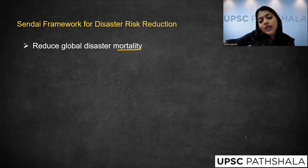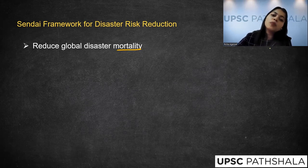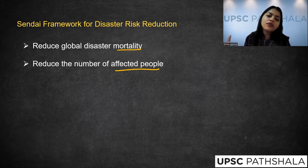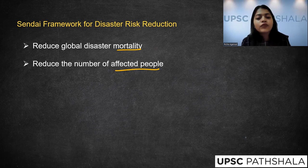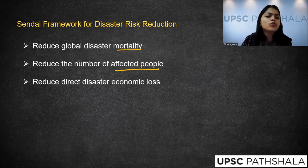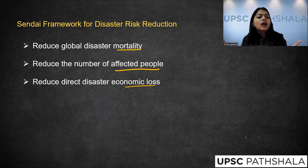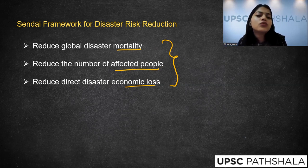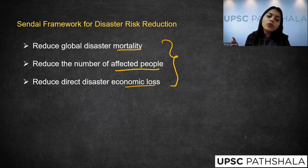We need to reduce disaster mortality — the number of people who die as a result of disasters. But not just those who die; we also need to reduce the number of people who are affected. Even if you've lost your cattle or lost a limb, you are affected and at risk. Beyond mortality and being affected, there is also huge economic loss — you might have lost your house or your place of work. All three kinds of loss — loss of life, being affected, and economic loss — can be reduced if we reduce the risk to critical infrastructure.